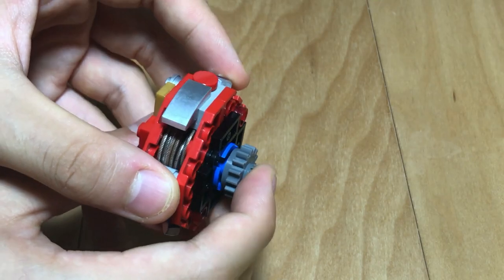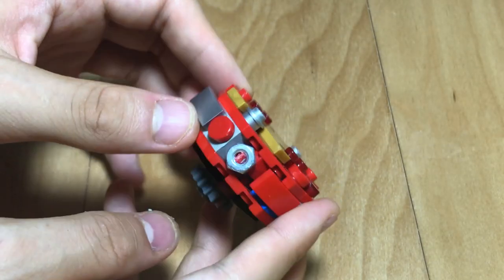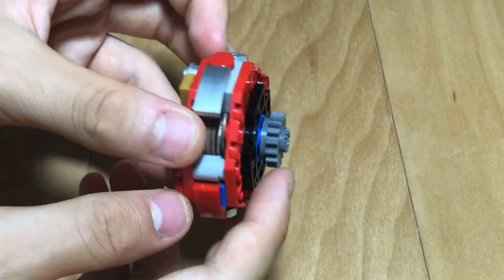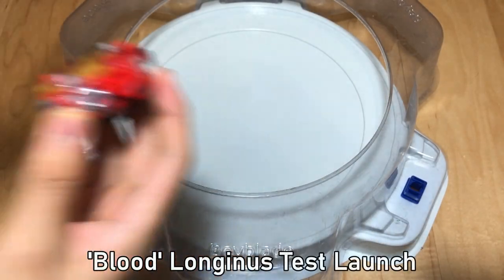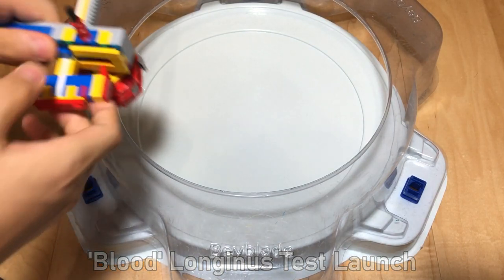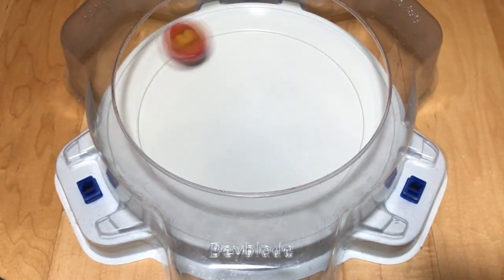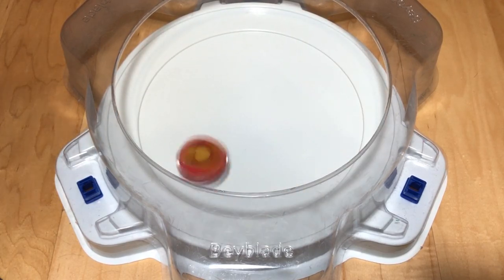Putting the big together, we have Blood Longinus Dime Shift Variable. It's a pretty short attack type. Longinus Test Launch. Three, two, one, let it rip. Pretty fast.